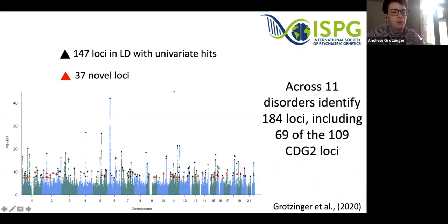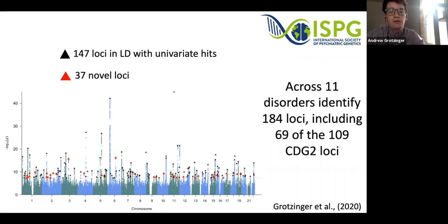In this Manhattan plot, I'm showing hits with both black and red triangles. Black triangles reflect hits in LD with univariate hits, while red triangles indicate novel loci relative to the univariate GWAS. This highlights the ability of cross-disorder efforts not just to unpack genetic variants underlying comorbidity, but also to leverage shared power across traits to identify new hits and enable novel discovery.